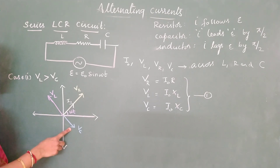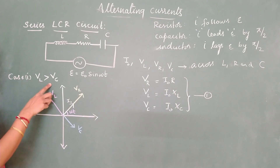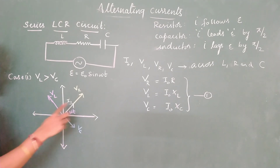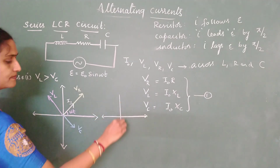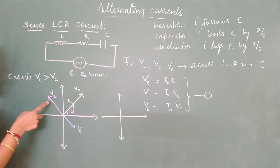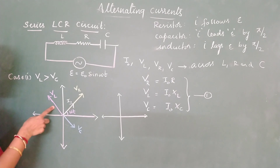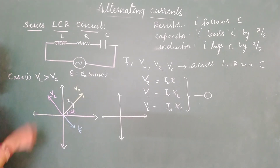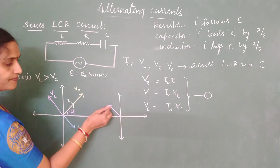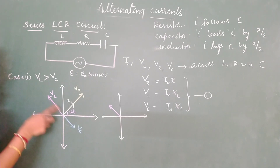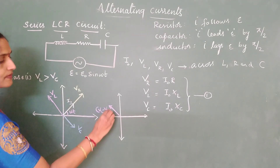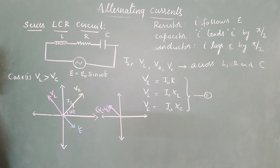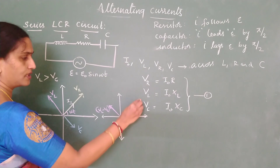Now, V_L and V_C vectors are opposite to each other. Since we took the first case where V_L is greater than V_C, we can apply vector addition: since they are 180 degrees apart, the resultant of these two is V_L minus V_C, pointing in the direction of V_L, since V_L is greater than V_C.